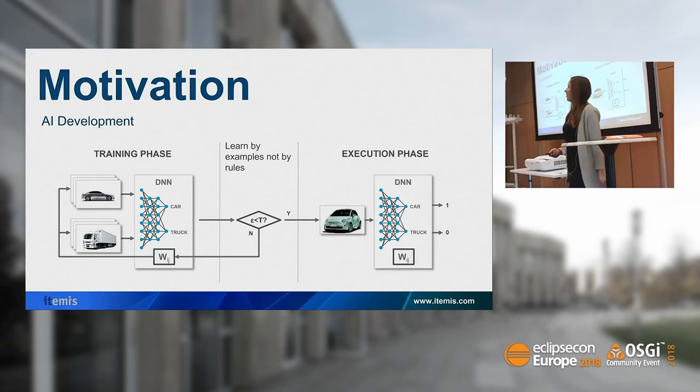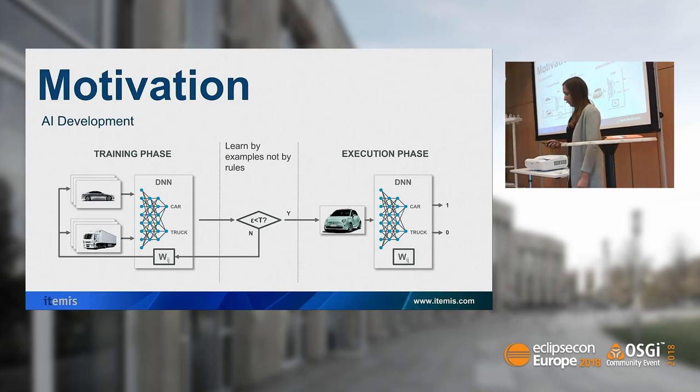Then in the execution phase — which is basically the application — it should be able to predict whether an image or camera input shows a car or a truck.